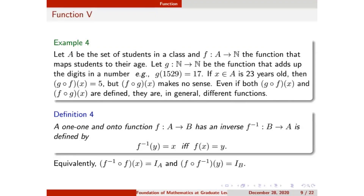Next we come to the definition of inverse function — how we define the inverse of a function. The inverse of a function can only be defined when the function is one-to-one and onto. If a function is one-to-one and onto, we call it bijective. If a function is bijective, then we can define its inverse.